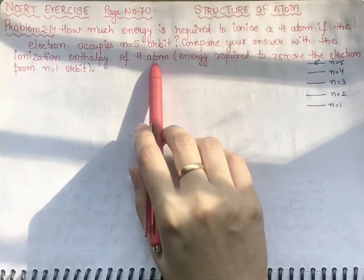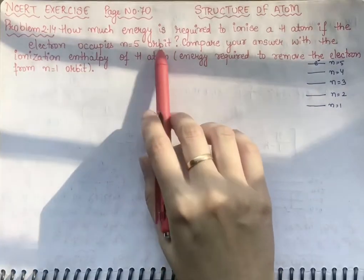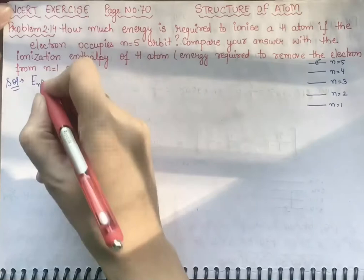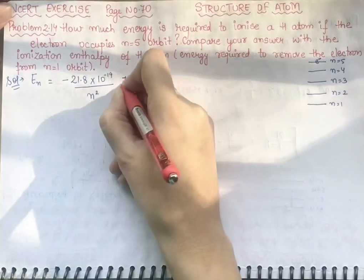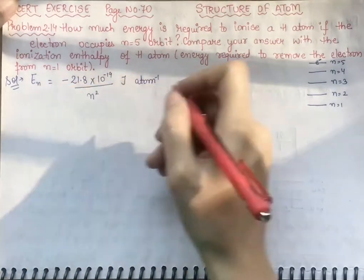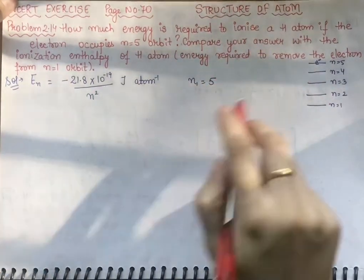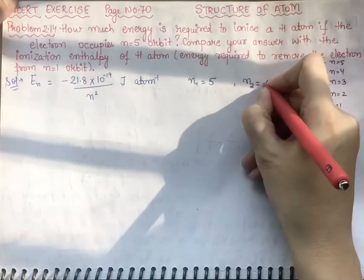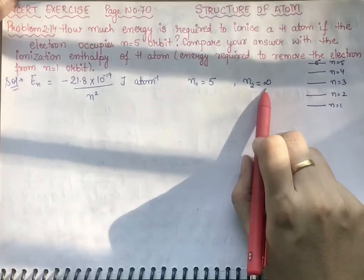We have N equal to 1 for the ionization enthalpy case, and N equal to 5 for the first case. The formula is: energy En equal to minus 21.8 into 10 raise to power minus 19 divided by N square. For the first calculation, N1 equals 5, meaning the electron is in the fifth orbit. N2 will be infinity, because we have to remove the electron from the orbit permanently.